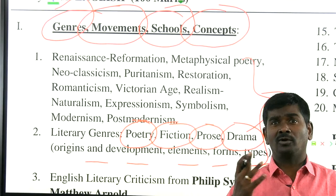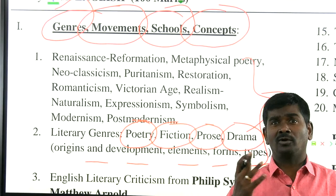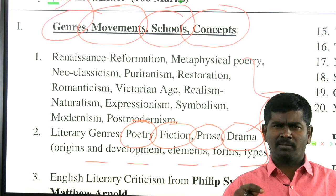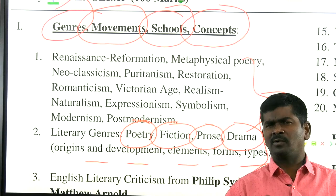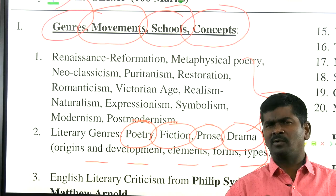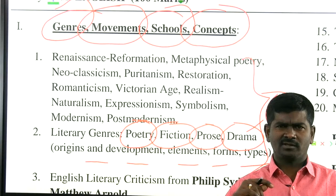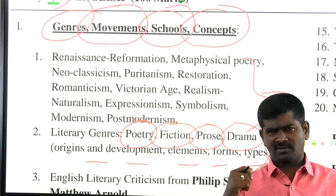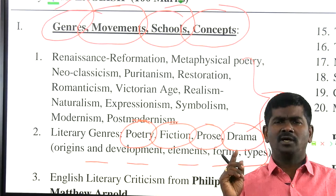'Putting right words in right order' is another definition. 'Poets are liars, they have to be banished from society' — given by Plato in his Republic. 'Poets are the creators of new knowledge' — given by Aristotle. 'Poetry is a form of mimesis' — first given by Aristotle in his book Poetics. 'What oft was thought but ne'er so well expressed' — given by Alexander Pope. 'Poetry refers to a spontaneous overflow of powerful feelings and emotions recollected in tranquility.'